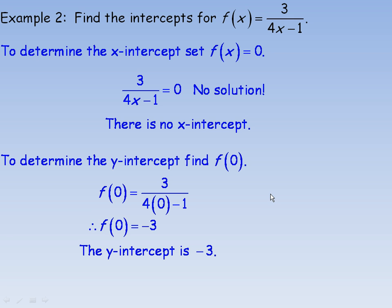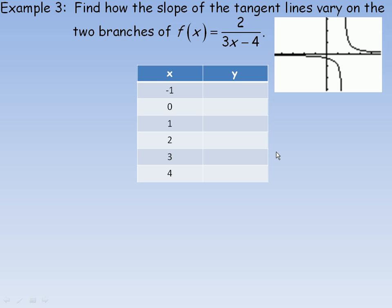So that's how you find intercepts for actually any function, not just rational functions. In example number 3, we're asked to find how the slope of the tangent lines vary on the two branches of this graph. First of all, we're going to find where the vertical asymptote is, where that non-permissive value is for x. So I would set the 3x minus 4 to 0 to find out where that vertical asymptote is. Solving for x, adding 4 to both sides, I get 3x equals 4.